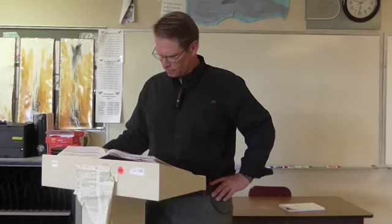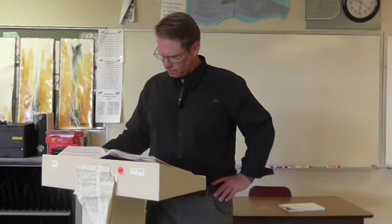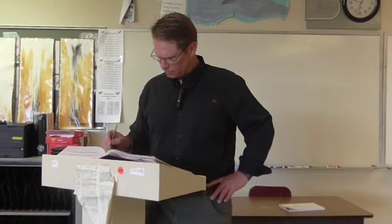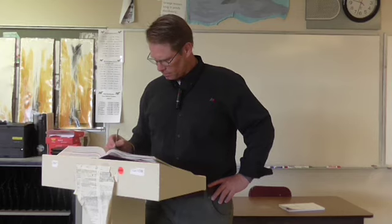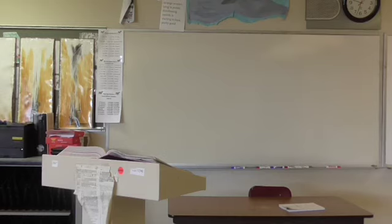'Choosing such a tide, I hoped for a glimpse of the pool. The ebb was to fall early in the morning. I knew that if the wind held from the northwest and no interfering swell ran in from a distant storm, the level of the sea should drop below the entrance to the pool. There had been sudden, ominous showers in the night, with rain like handfuls of gravel flung on the roof. When I looked out into the early morning, the sky was full of a gray dawn light, but the sun had not yet risen. Water and air were pallid. Across the bay, the moon was a luminous disk in the western sky, suspended above the dim line of distant shore, the full August moon drawing the tide to the low, low levels of the threshold of the alien sea world. As I watched, a gull flew by above the spruces. Its breast was rosy with the light of the unrisen sun. The day was, after all, to be fair.'